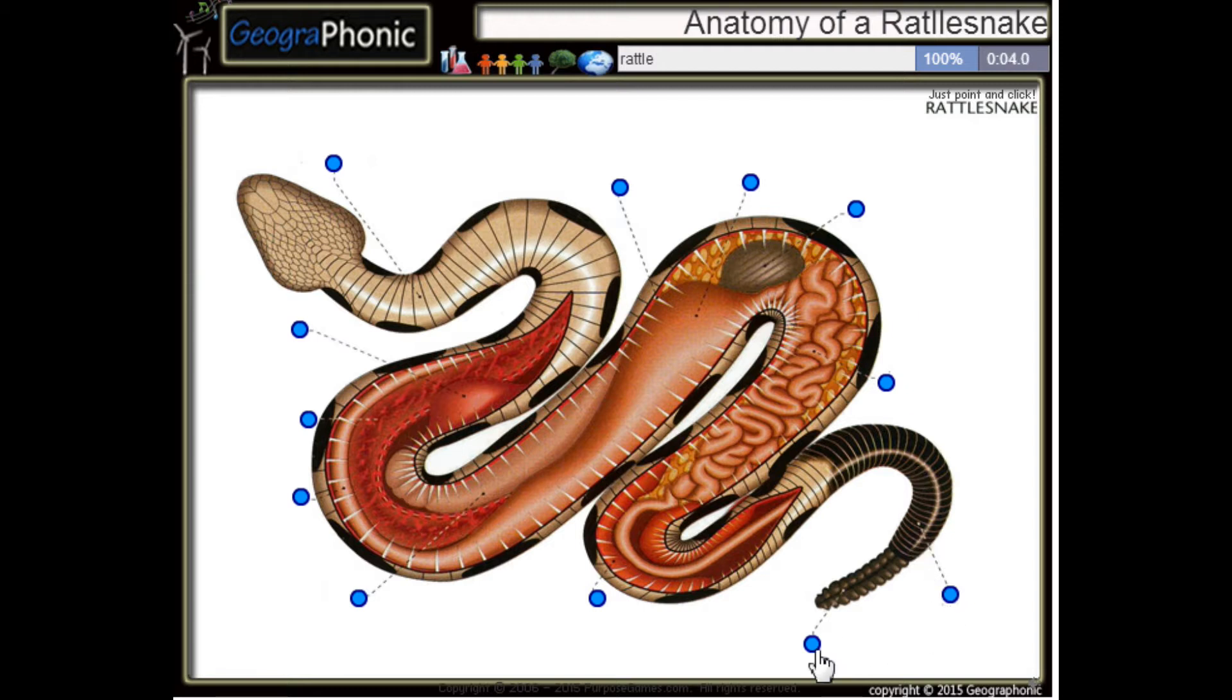This is the rattle of the snake. Here we see a belly scale. This is of course its tail.